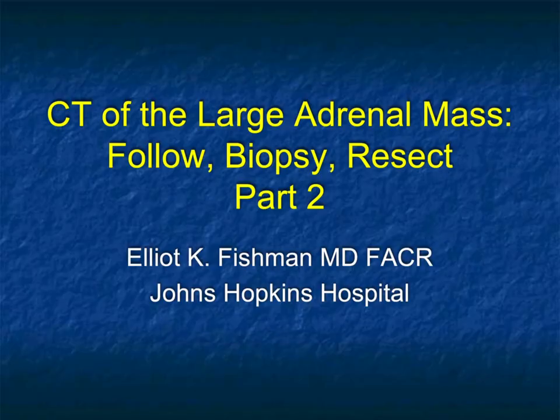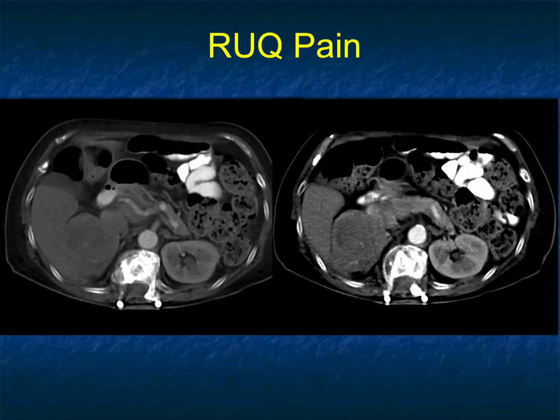Hi, this is Elliott Fishman. Welcome to part two of our large adrenal mass evaluation. We left off last time looking at a couple of cases with hemorrhage. We know there are many reasons for hemorrhage — coumadin, trauma — and usually those are fairly easy. You have a history or you think you might have a history, and they tend to be oval.